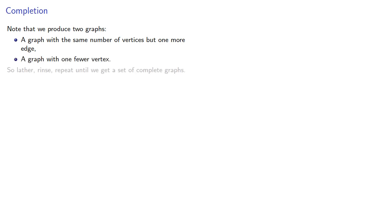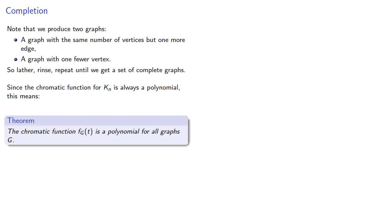So lather, rinse, repeat, until we get a set of complete graphs. Since the chromatic function for Kn is always a polynomial, this means the chromatic function is a polynomial for all graphs.